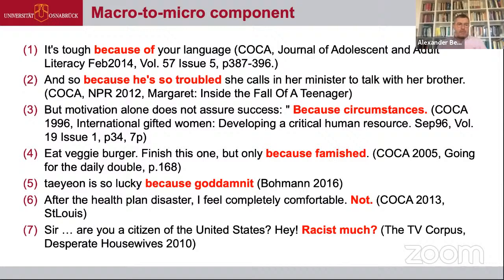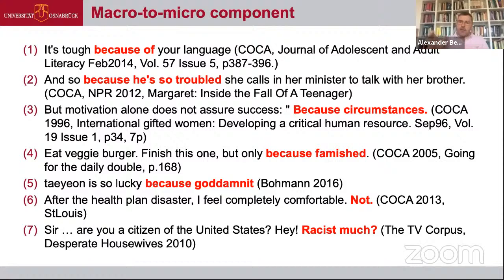This is one way speakers intentionally relate to Keller's Maxim and want to be funny or witty. The same thing applies to examples like 'After the health plan disaster, I feel completely comfortable. Not.' This post-sentential 'not' has certain pragmatic effects and is something you use when you want to be noticed as somebody who's very hip and witty. And similarly, 'Hey, racist much?' — this post-adjectival 'much' is also something people use when they want to be funny. These are examples of a universal constraint going back to Keller's Maxims.